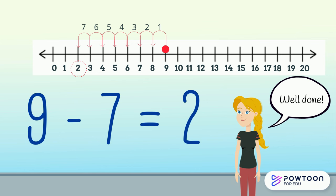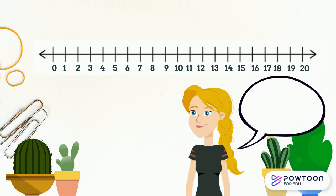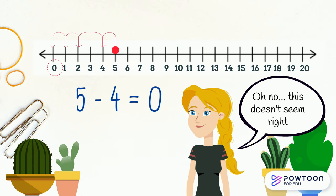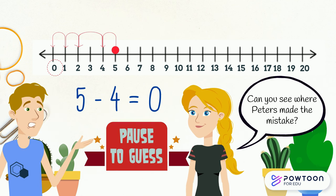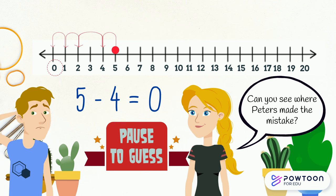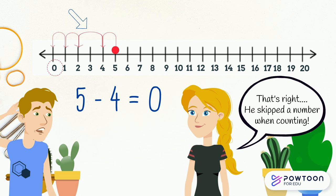Let's go over to Peter and see how he's doing. Five take away four equals zero. Oh no, this doesn't seem right. Can you see what Peter's done wrong? That's right, he skipped a number when counting.